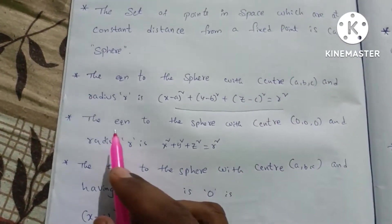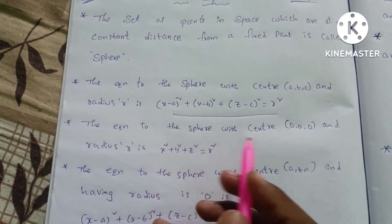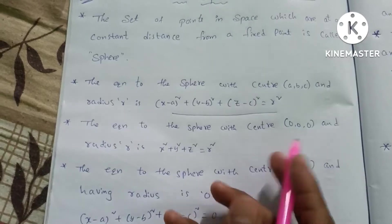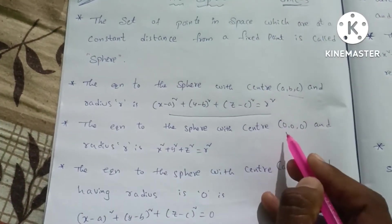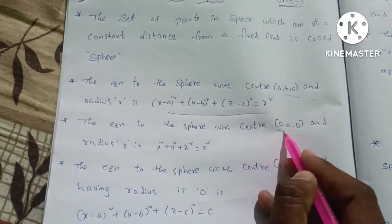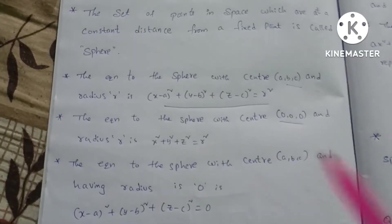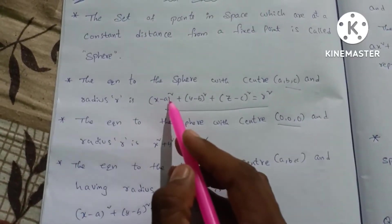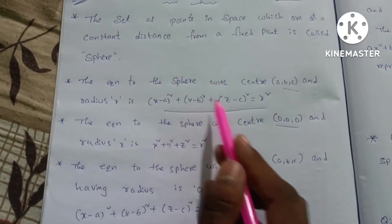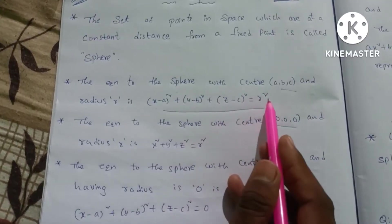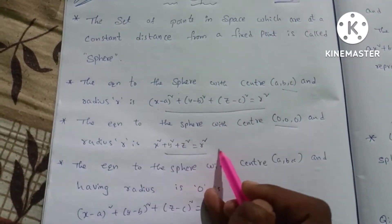The second point is the equation of the sphere with center (0, 0, 0). When the center is (0, 0, 0), we substitute a, b, c as zero. So the formula becomes: x square plus y square plus z square is equal to r square. This is the formula.